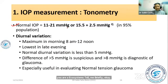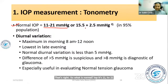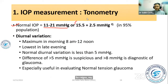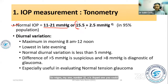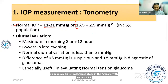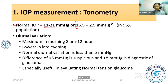The normal IOP (intraocular pressure) range is 11 to 21 mmHg. The mean value is 15.5 plus or minus 2.5 mmHg, which covers 95 percent of the population.